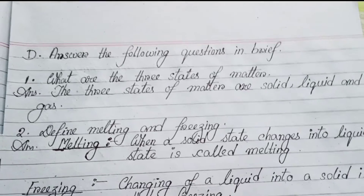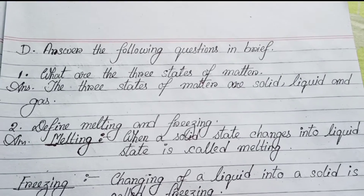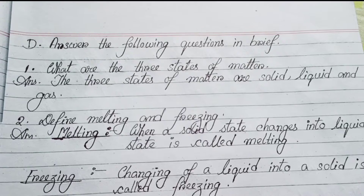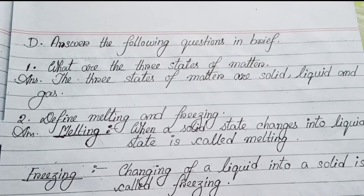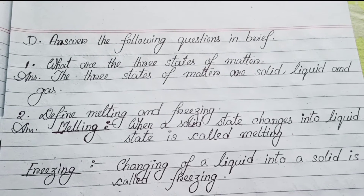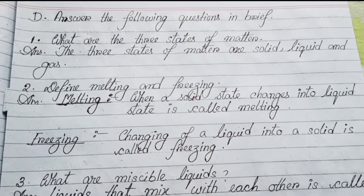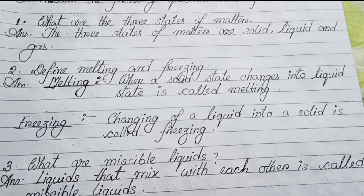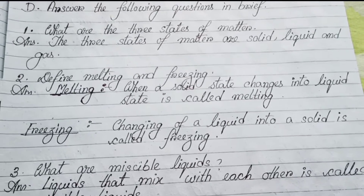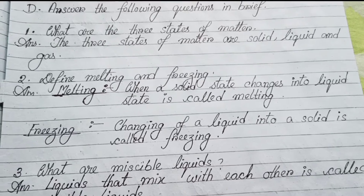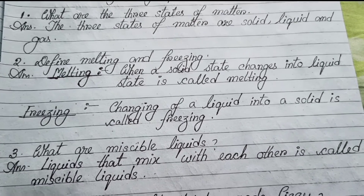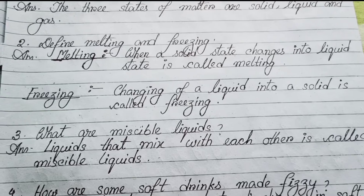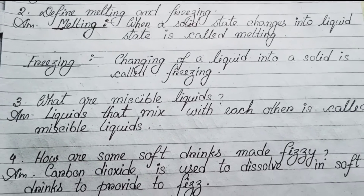Next, Part D — Answer the following questions in brief. Number 1: What are the three states of matter? The three states of matter are solid, liquid, and gas. Number 2: Define melting and freezing. Melting — when a solid state changes into liquid state, it is called melting. Freezing — changing of a liquid into a solid is called freezing.